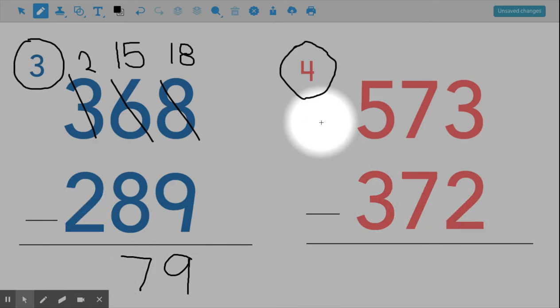Let's move on to number four. Number four is five hundred seventy-three take away three hundred seventy-two. Starting in my ones column, I have three take away two. Hold up three fingers and take away two of them. How many do you have left? We've got one.